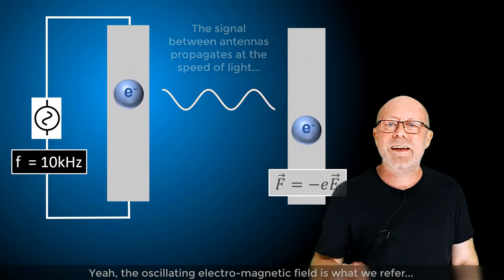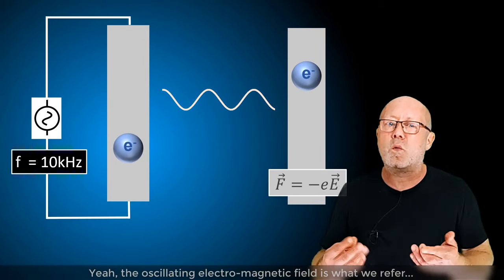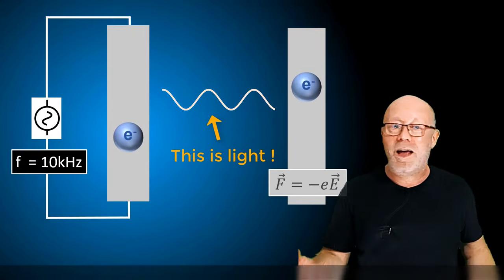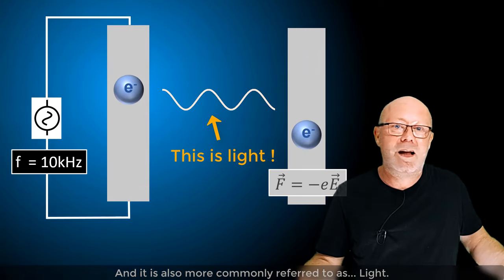The oscillating electromagnetic field is what we refer to as an electromagnetic wave or EM wave, and it is also more commonly referred to as light.